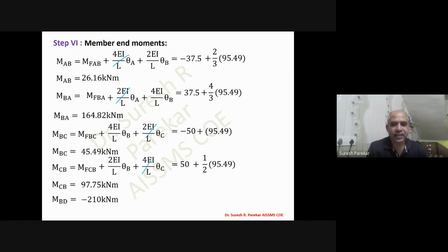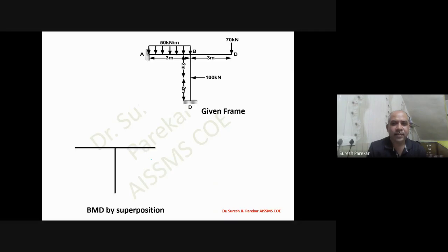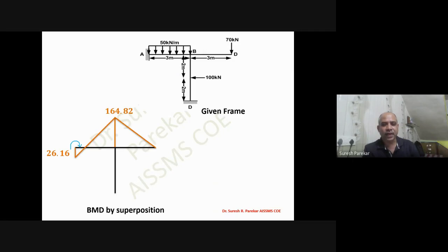With these final moment values we can draw the bending moment diagram. Since clockwise is positive, the BMD due to final moments and the BMD due to simple support conditions are superimposed to give the complete BMD. Problem 1 is complete.